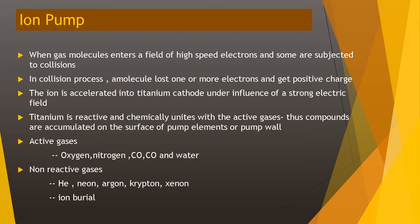When gas molecules enter a field of high-speed electrons, some are subjected to collisions. In this collision process, a molecule loses one or more electrons and gets a positive charge. The ion is accelerated into the titanium cathode under the influence of a strong electric field. Titanium is reactive and chemically unites with active gases, and the resulting compounds accumulate on the surface of pump elements or on the pump wall.